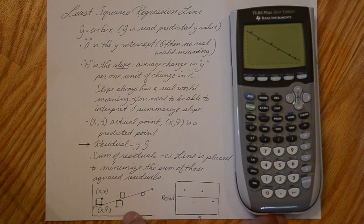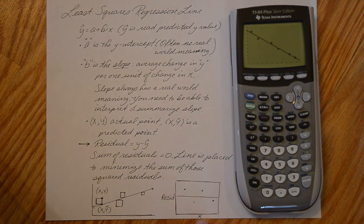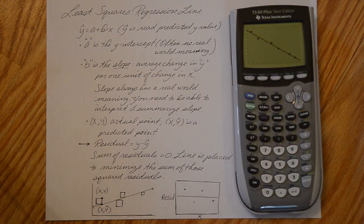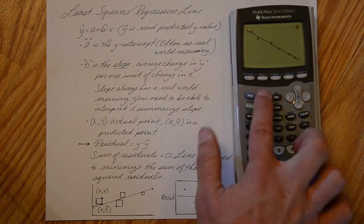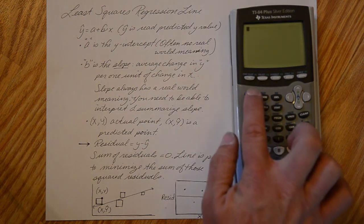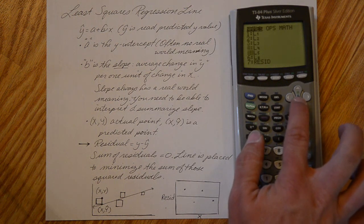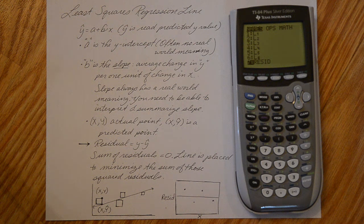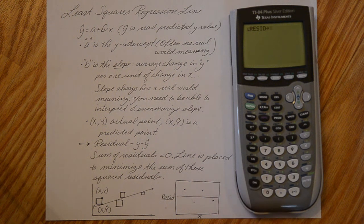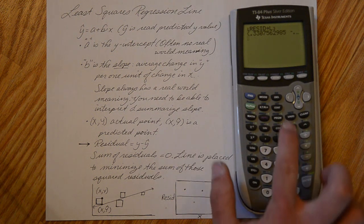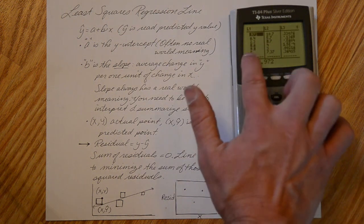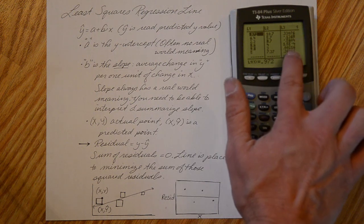For the residual plot, we want the original x's on the x-axis and the residuals on the y-axis. When you make the regression line, the calculator computes all the residuals for you and stores them in a list. Go back to the home screen, go to second list, find the residuals list, store it — second list, store, into an empty list, in my case list three, and hit enter. Now in stat edit, I have three columns: original x's, original y's, and the residuals (y minus y-hat).